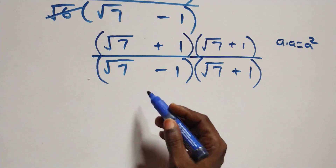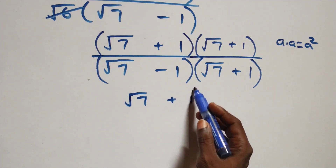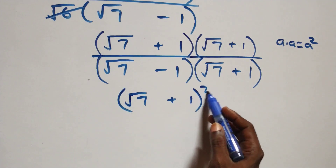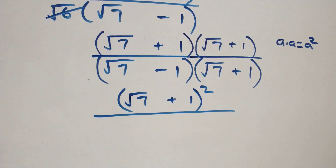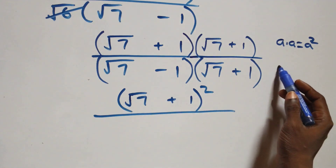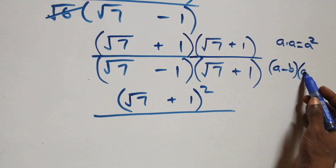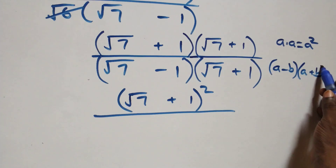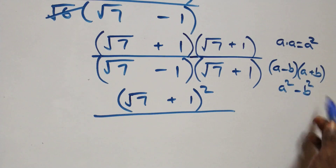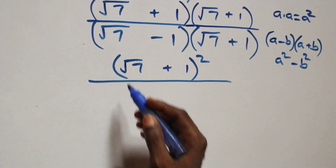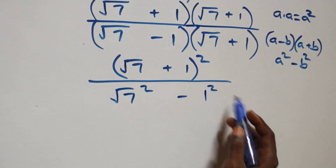The numerator becomes (√7 + 1)². The denominator follows the difference of squares formula: (a − b)(a + b) = a² − b², giving us (√7)² − 1².